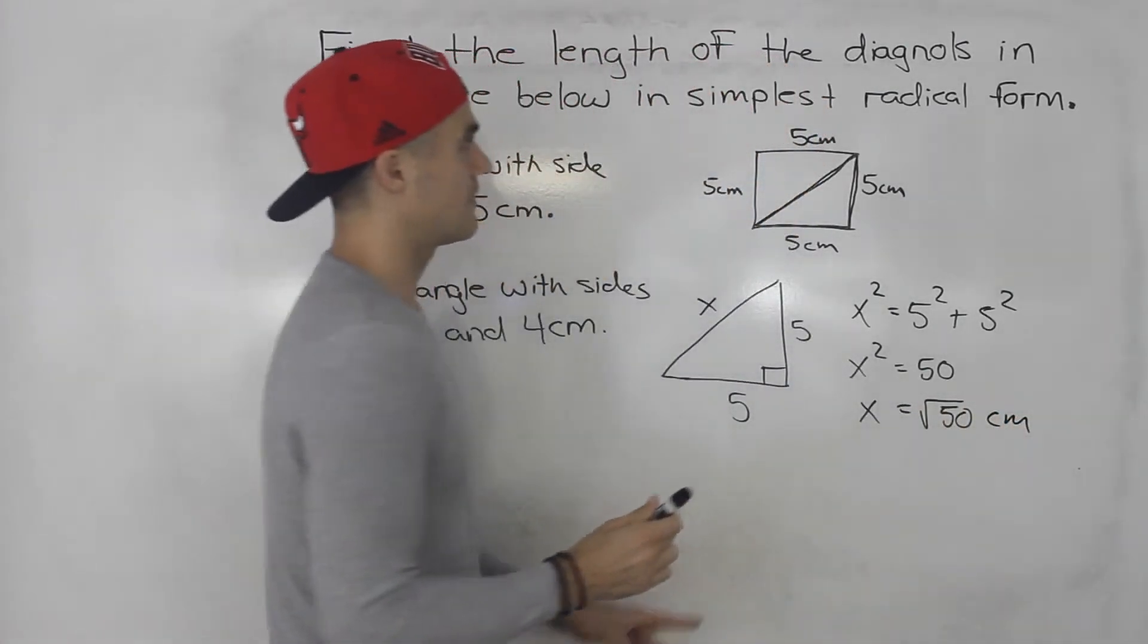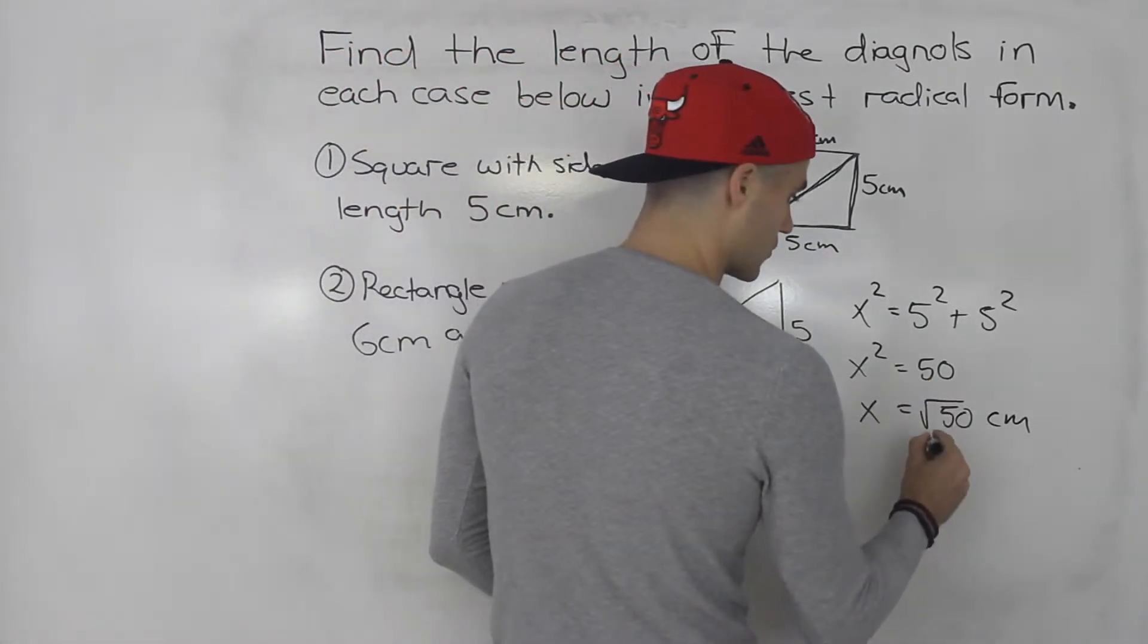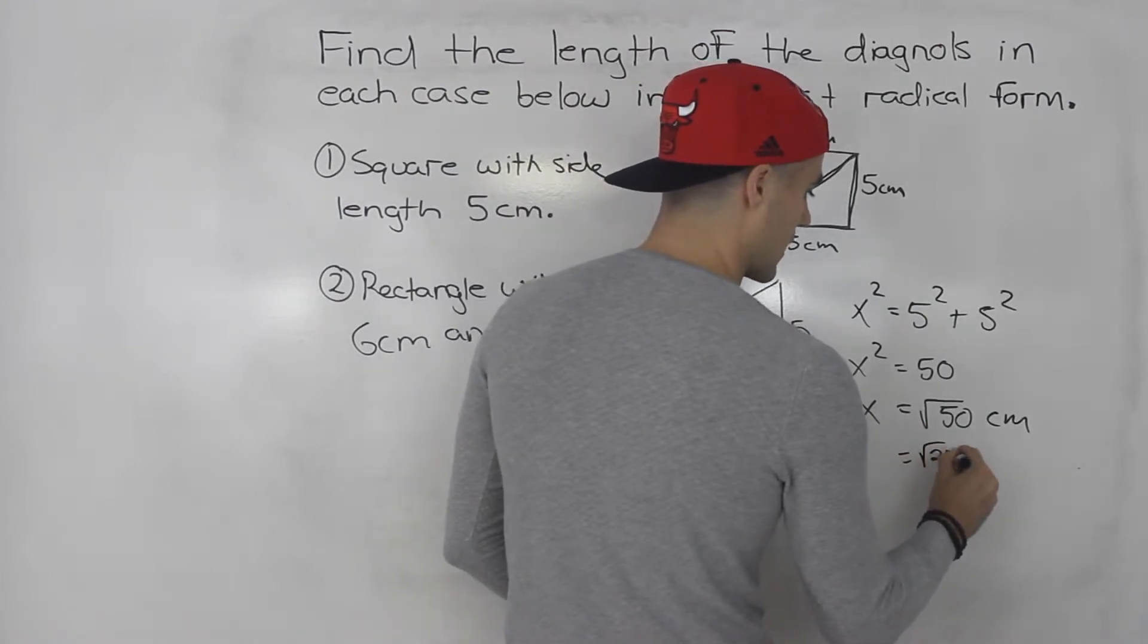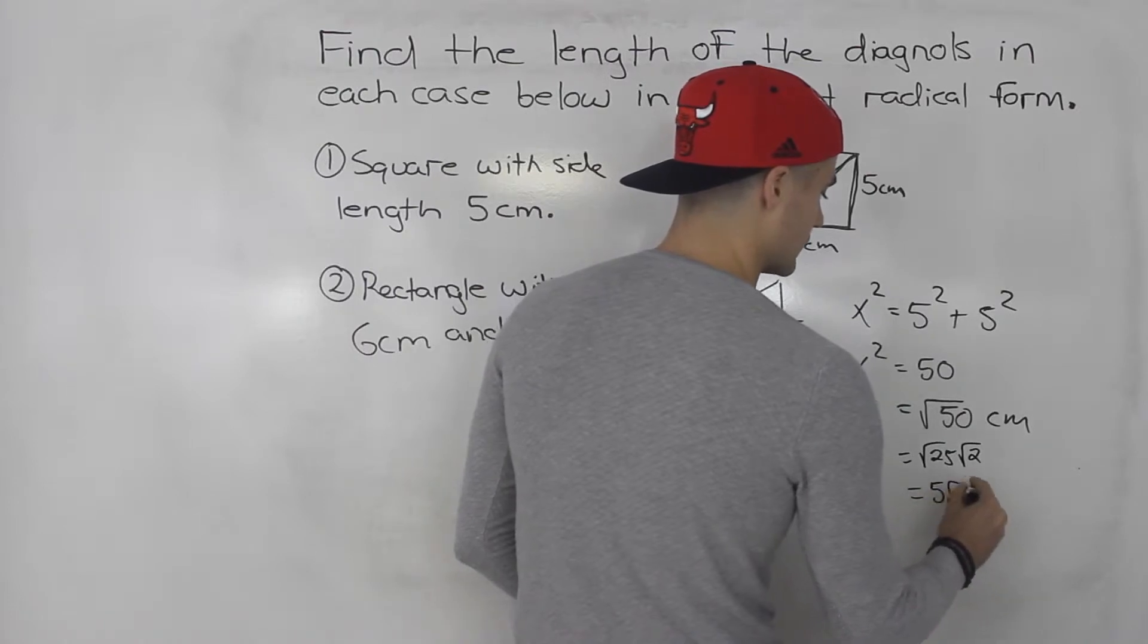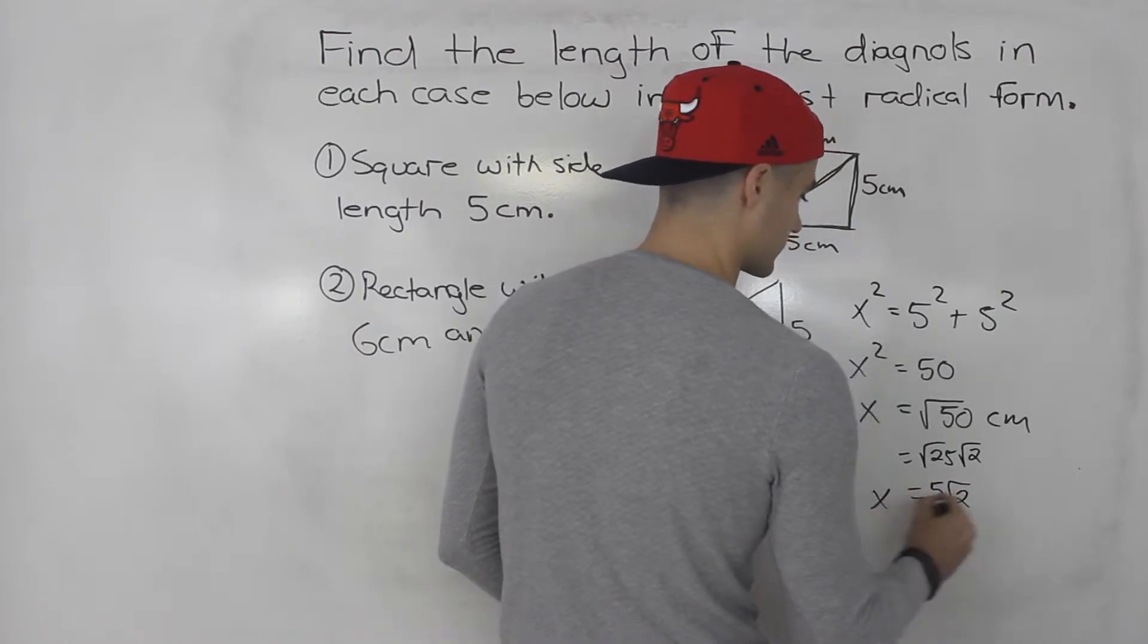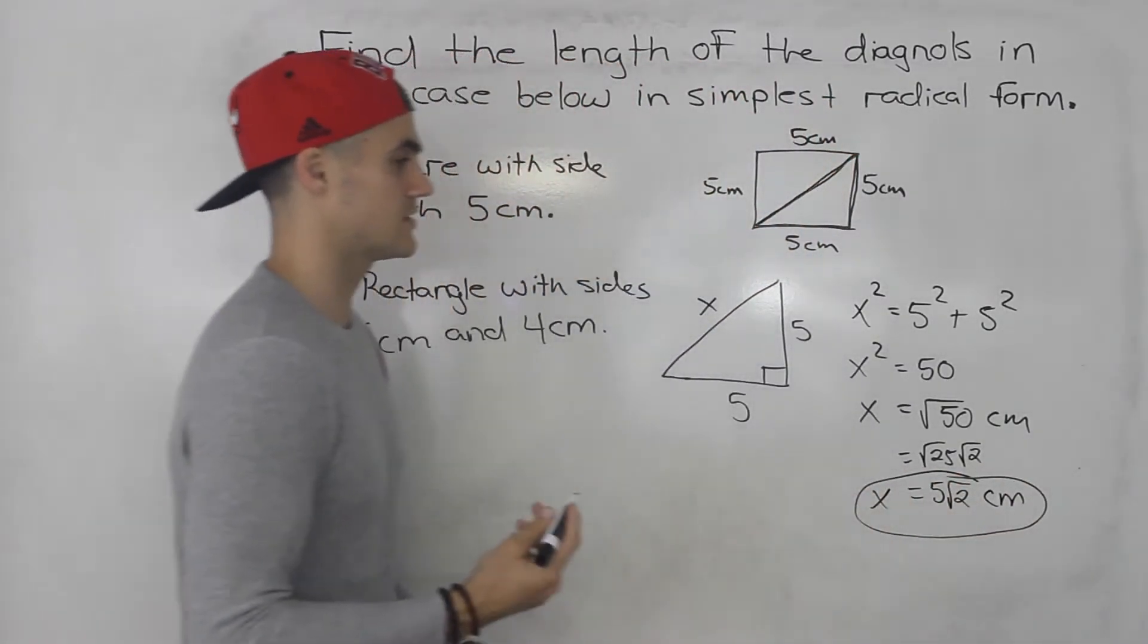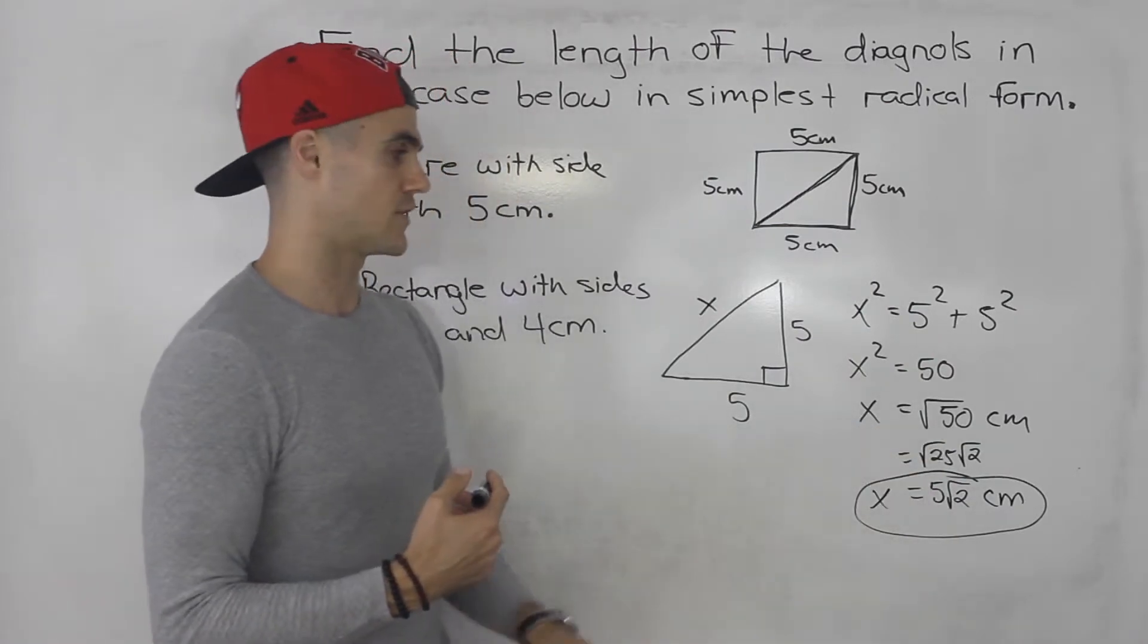But notice that they want the answer in simplest radical form. So we would simplify this radical. We could break this radical down into root 25 times root 2, which would give us 5 root 2. So that's the length of the diagonal in simplest radical form. 5 root 2 is the same as root 50.